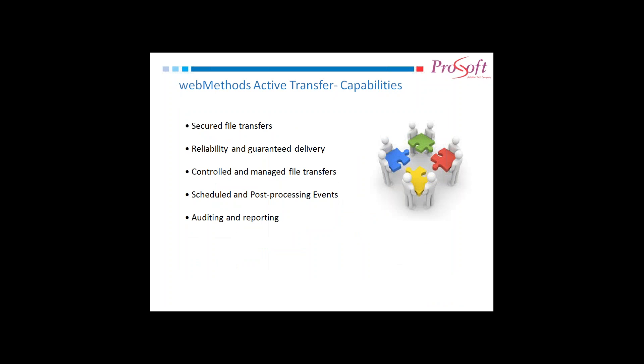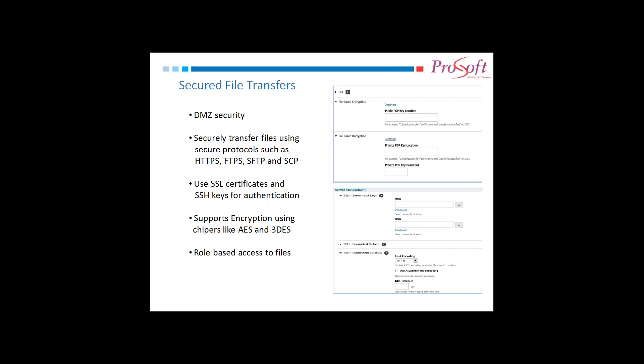These are some of the ActiveTransfer capabilities: secured file transfers, reliability and guaranteed delivery, controlled and managed file transfers, scheduled and post-processing events, and auditing and reporting. We will be sending valuable and confidential business data over the managed file transfer setup, so we need to make sure to prevent data leakage from intruders or hackers. Some of the security features of managed file transfers: as the gateway server is within the DMZ zone, it will itself provide some security to the internal server so that unauthorized users can't access our AT server.